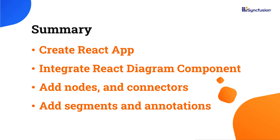In this video, I showed you how to create a React application and integrate the Syncfusion React Diagram component. You saw how to create and add nodes, and define connectors and segments with annotations. If you would like to see a working example, download one from the GitHub link shared in the description below. I've also included a link to check if you qualify for our community license, giving you a free license key for our entire React Suite. If you found this video useful, don't forget to click the like button and subscribe to our channel. Thanks for watching!